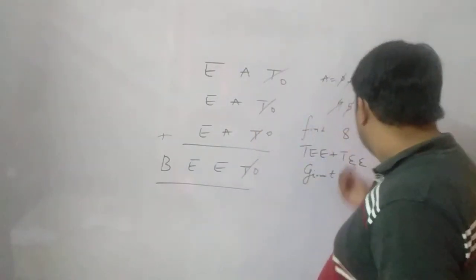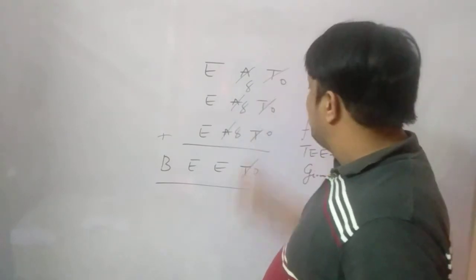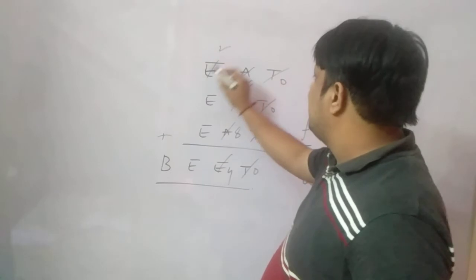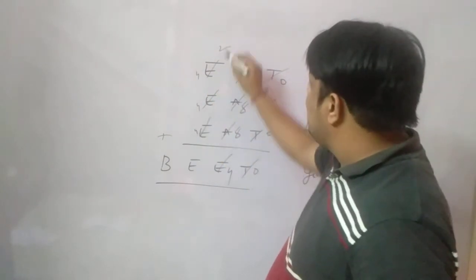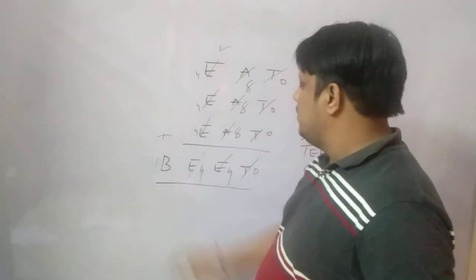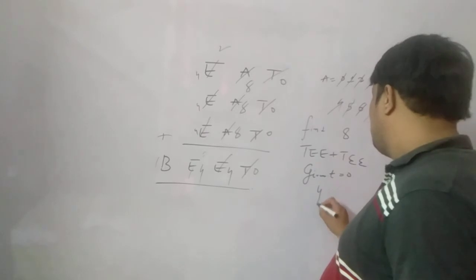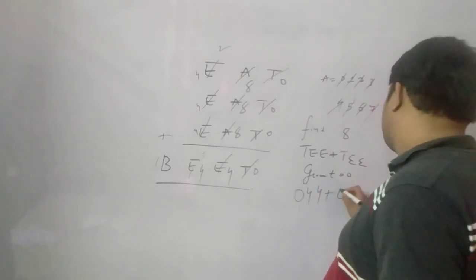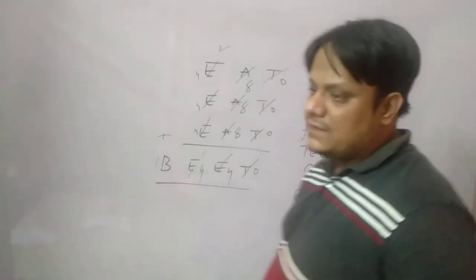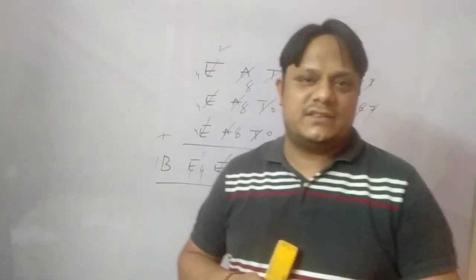Putting E=8: 8+8+8 = 24, so A=4 and carry 2. Then 4+4+4 = 12, plus carry 2 = 14. So the units digit is 4 and carry 1. B's value: with 1 carry, B = 1. T's value is 0, so the number is 840. The answer is EAT = 840 and BEAT = 2520, meaning 88 — it was pretty simple compared to the previous two. Thank you so much, take care, bye.